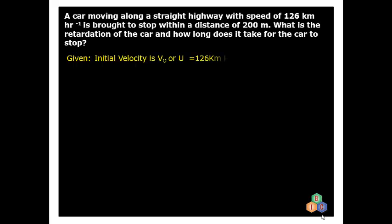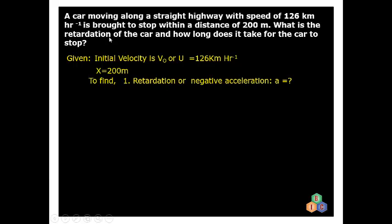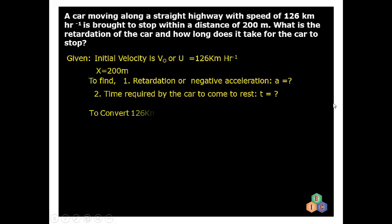It is given that the initial velocity of the car, represented by V₀ or U, is 126 kmph, and x is equal to 200 meters — that is the car will travel a distance of 200 meters after the brakes are applied. We want to find the retardation or negative acceleration of the car (a) and the time required for the car to come to rest (t) in seconds.